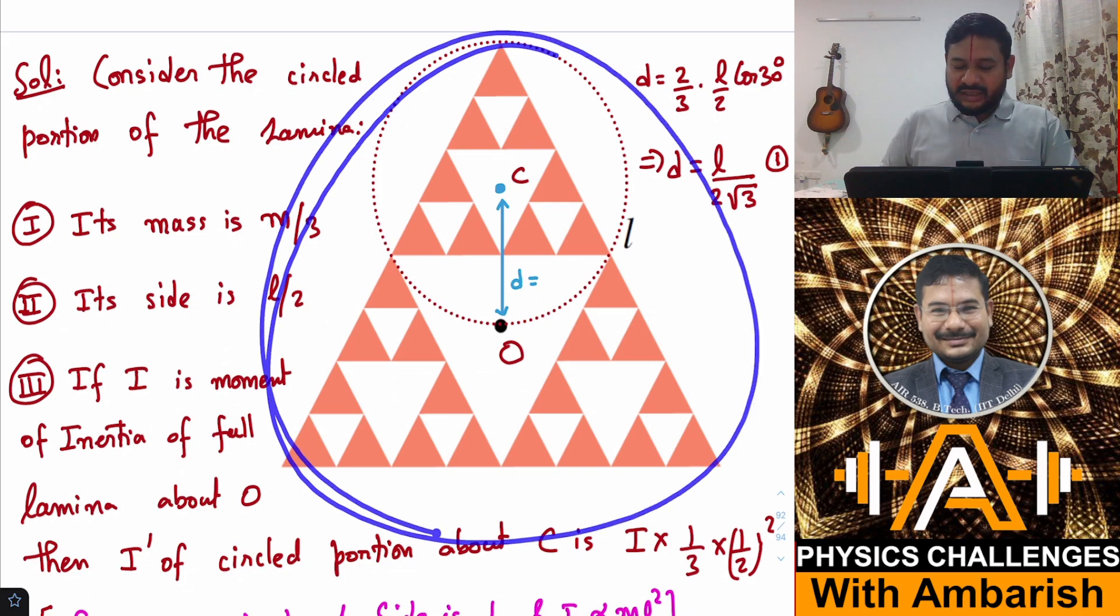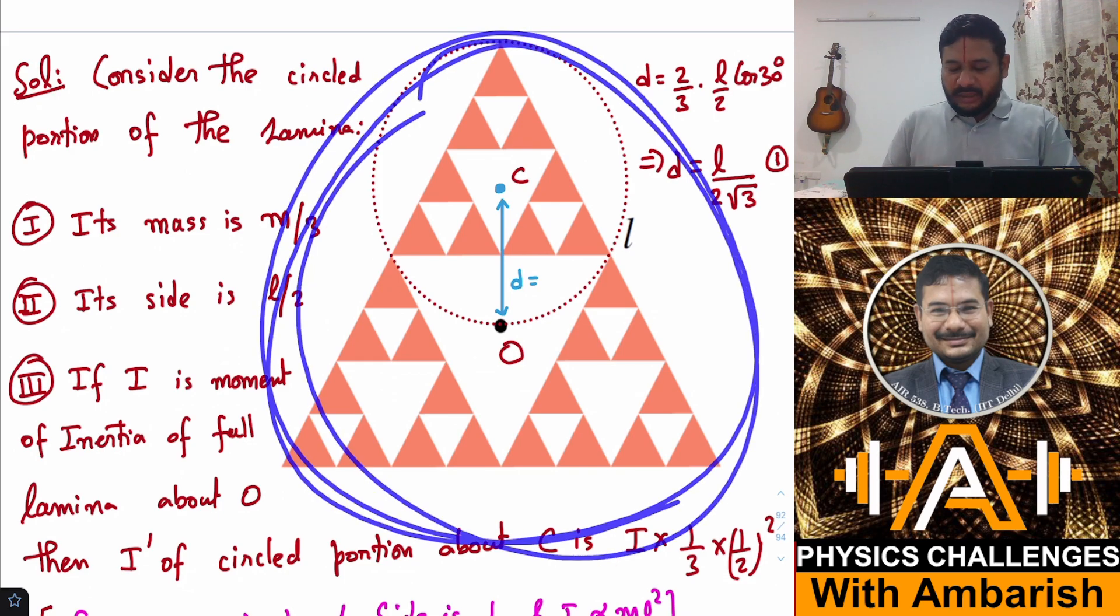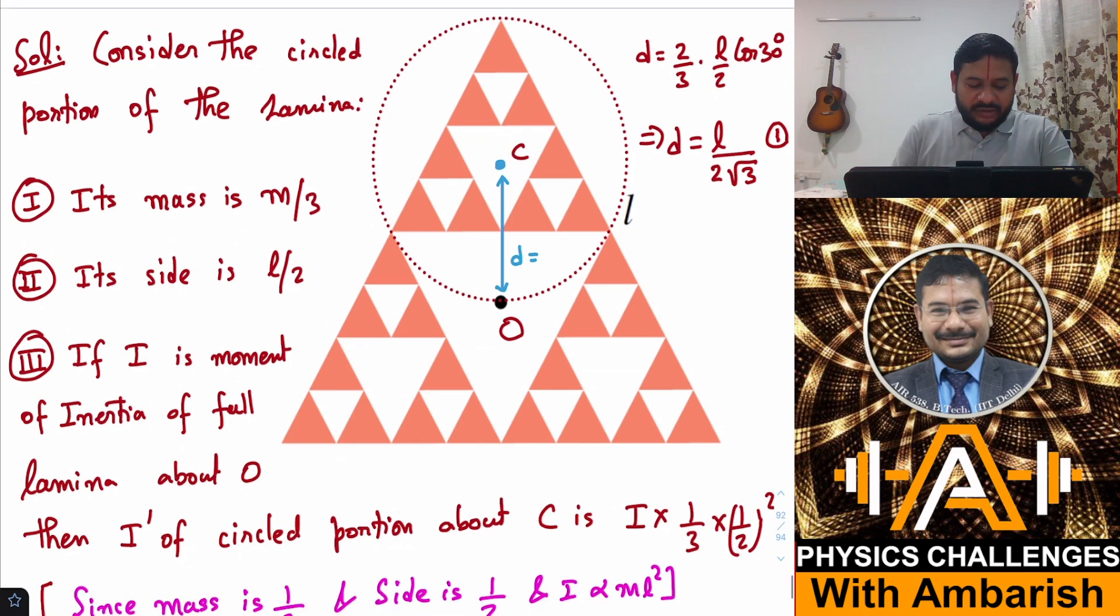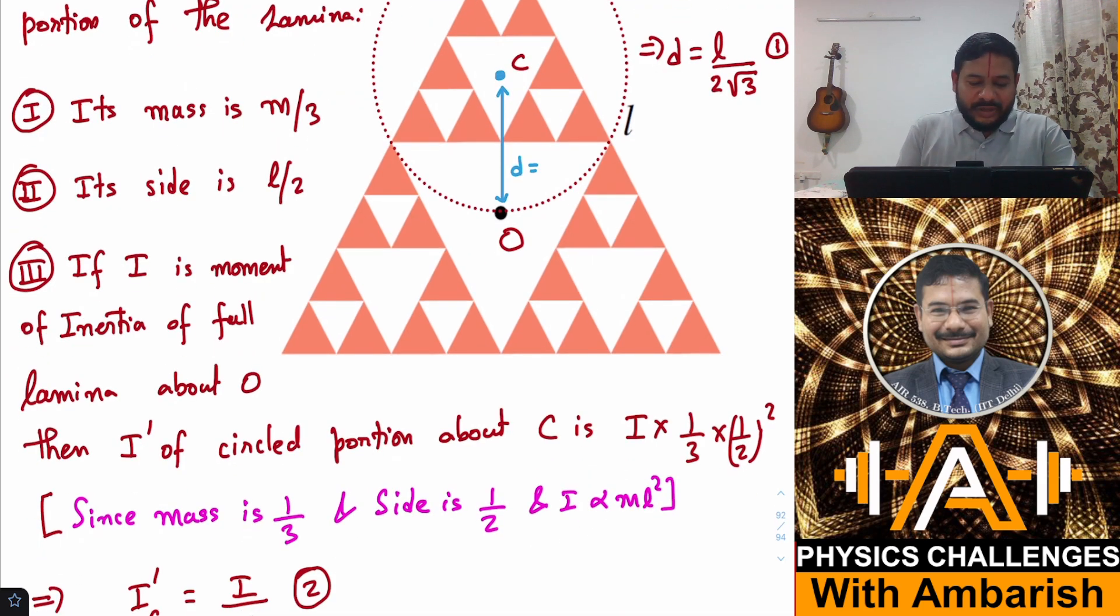Therefore, if the moment of inertia of the original triangle, the entire geometry about this axis is I, the moment of inertia of this smaller circled triangle about its own center should be equal to what? Moment of inertia is mass times L square.